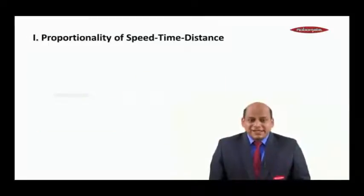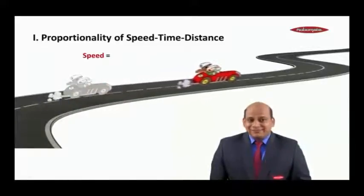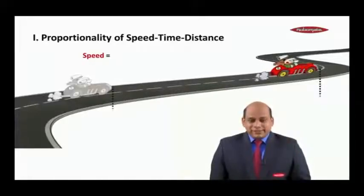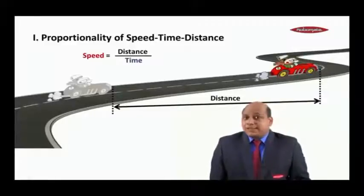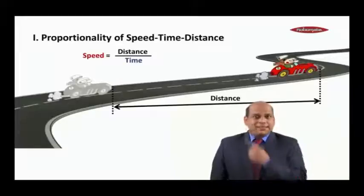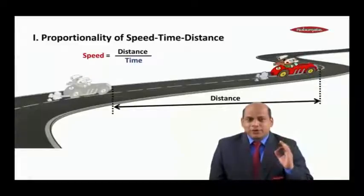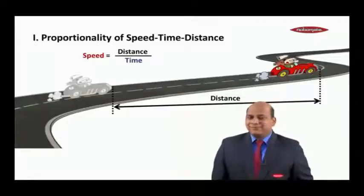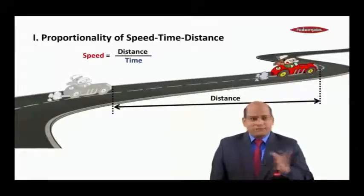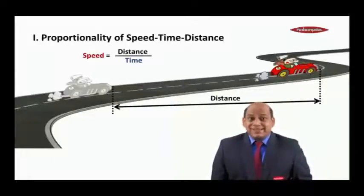Let's begin with the first part on proportionality of speed, time and distance. Before we begin, let us first understand what really is speed. If you look at a vehicle which is moving at a certain speed, the vehicle has covered a distance — from this point it has moved to this point. It must have taken some time to cover this distance. So speed is nothing but distance upon time. All other variations follow: distance equals speed into time, and time equals distance upon speed. The main formula is speed equals distance upon time.